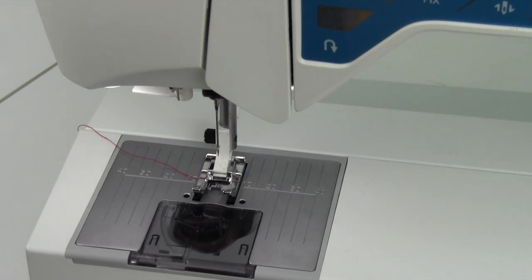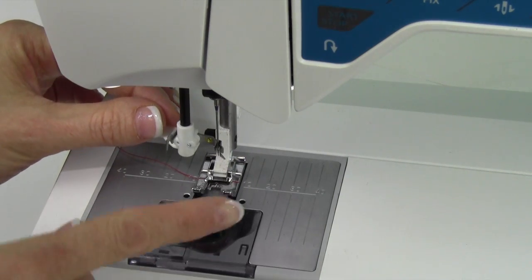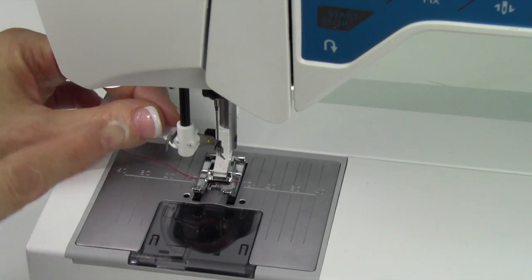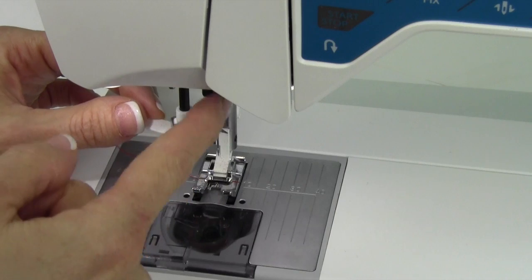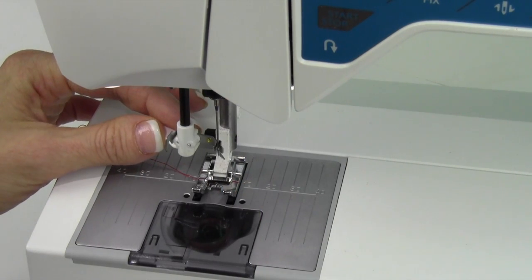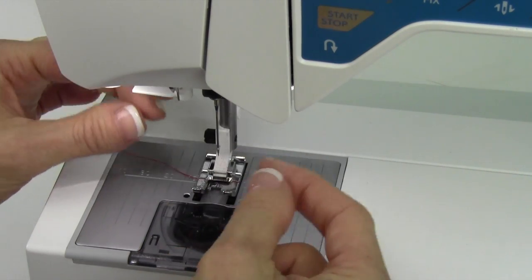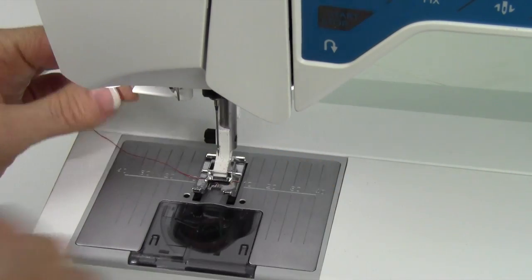Then also, when you have put a new needle in, if you go ahead and thread the machine and utilize your needle threader, you will know if you properly inserted that needle and it went up high enough. If the needle threader doesn't line up with the hole, that is clue number one that the needle needs to be lifted higher up, then tightened down.